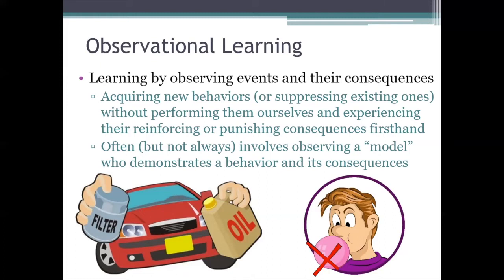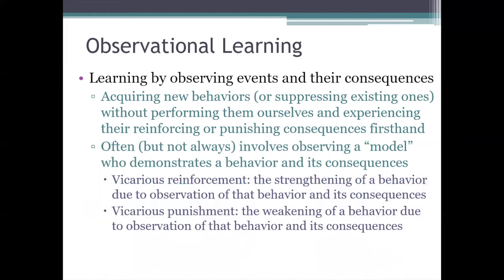Sometimes, after we observe an event and its consequences, we become more likely to perform a particular behavior. That behavior gets strengthened — we acquire it — and in those cases we say that we have been vicariously reinforced. But other times, after we observe an event and its consequences, we become less likely to perform a particular behavior. That behavior gets weakened, we learn to suppress it, and in those cases we say that we've been vicariously punished.